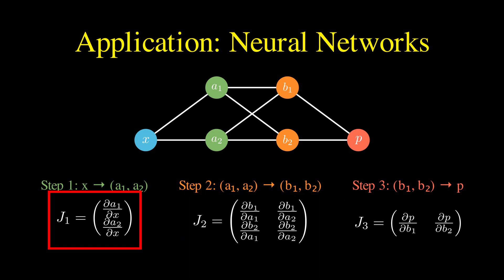The first transformation from x to the vector containing a1 and a2 produces a 2 by 1 Jacobian matrix, since we have two output functions of one input variable.